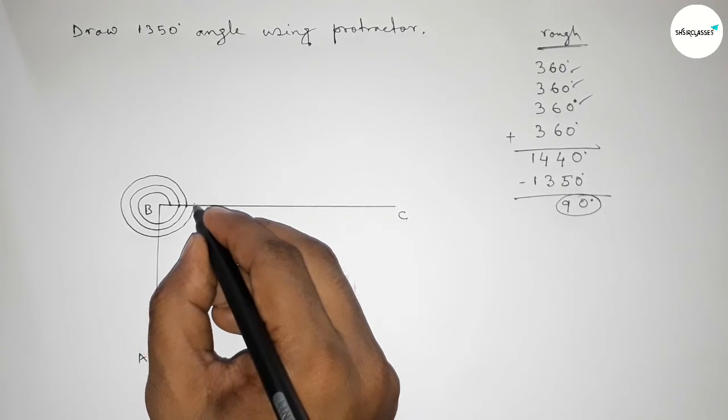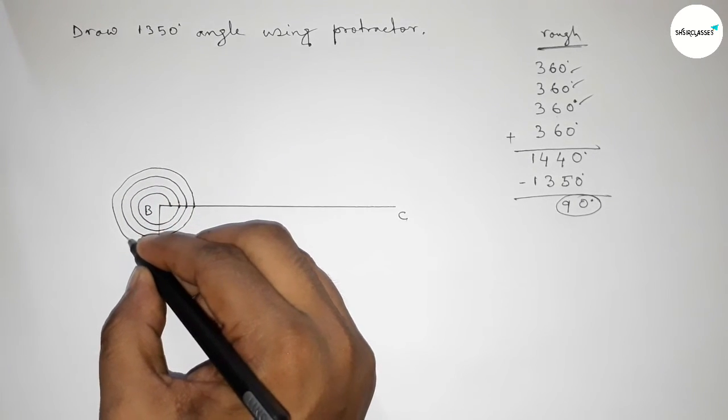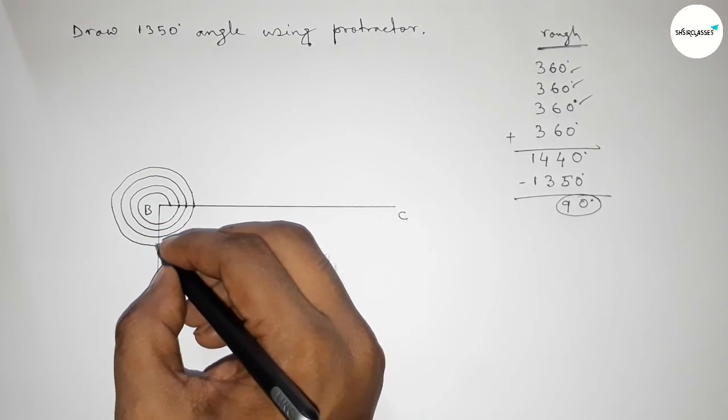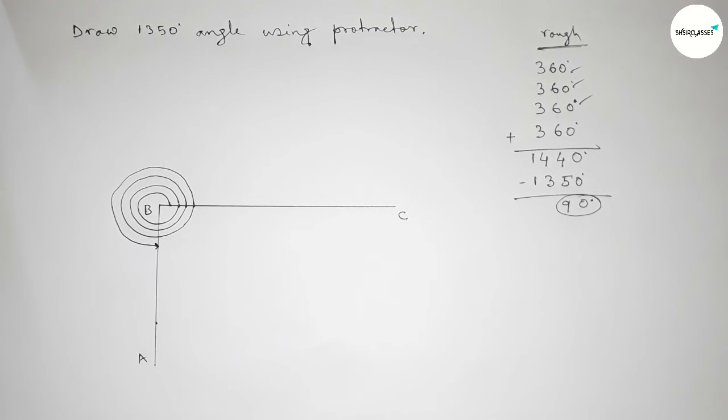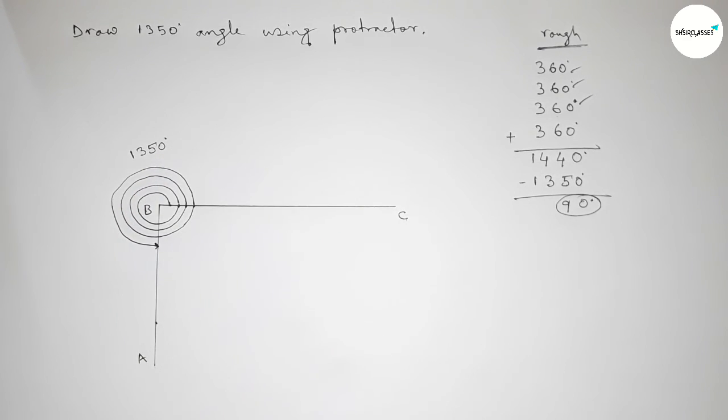So from here to this, so this is total 1350 degree angle because we have to subtract 90 degree angle from 360 degree angle. So that's all, thanks for watching, please share it.